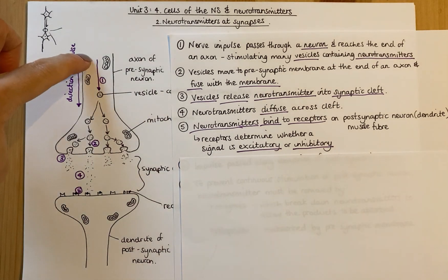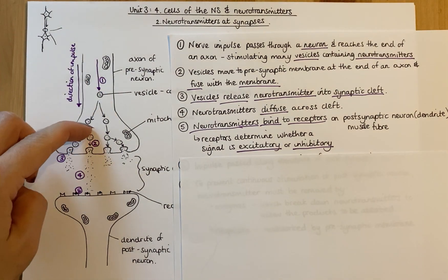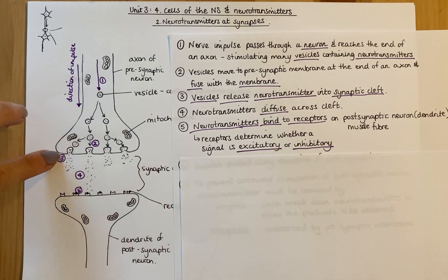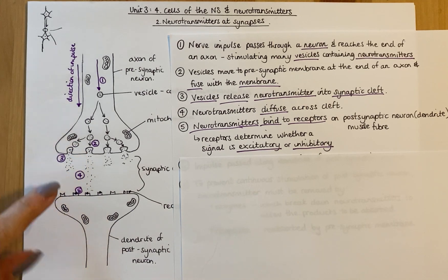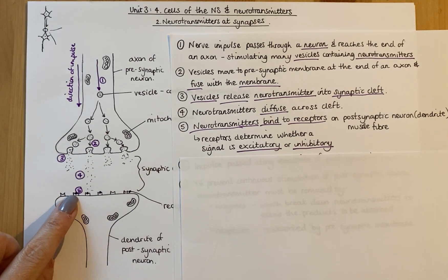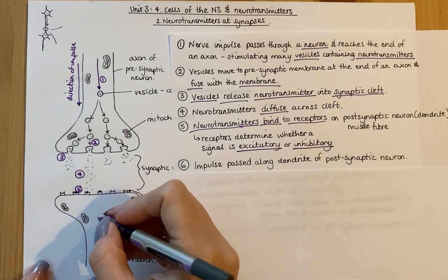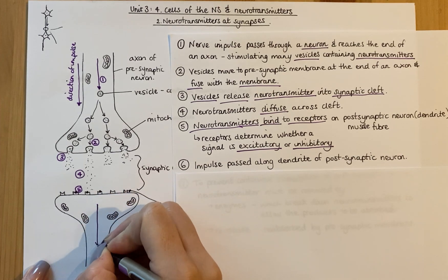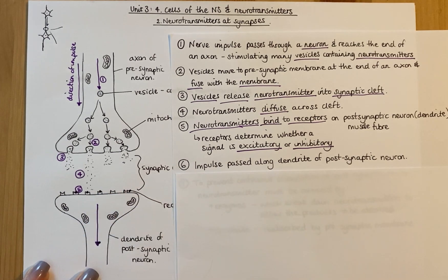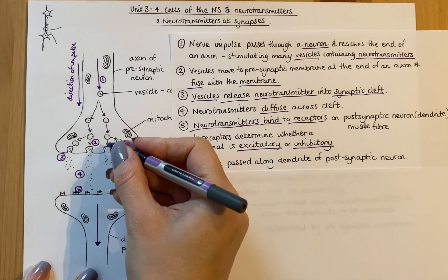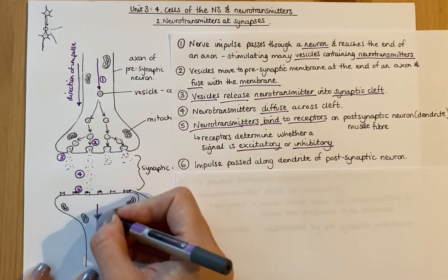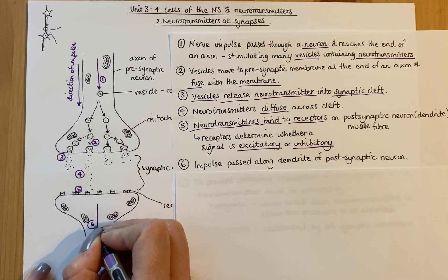You've got your impulse that passed down this axon, triggered the release of neurotransmitters into the synaptic cleft, and then they bound to the receptors on the post-synaptic neuron. Once that's happened, it stimulates an impulse to pass down this neuron — basically transmitting that impulse across the synaptic cleft, causing this neuron to then pass the impulse down itself.